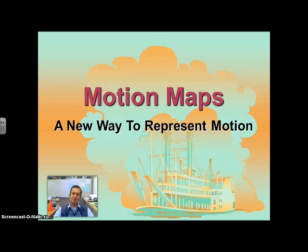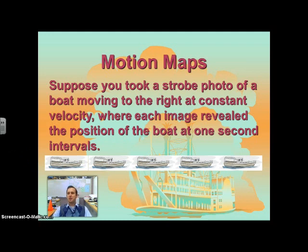Today we're going to talk about motion maps, a new way to represent motion. Suppose that we were to take a picture using a strobe light that was going off every second. And the picture is of a boat that's moving to the right down the river.